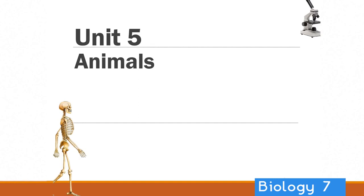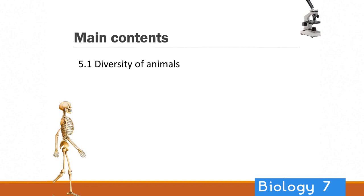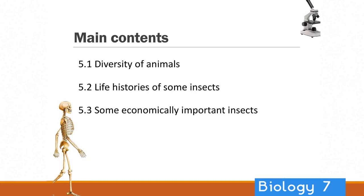Unit 5 on animals. This unit has four main components. The first is the diversity of animals. In 5.2 we'll be looking at the life histories of some insects. In 5.3 we'll be looking at some economically important insects, and in 5.4 we'll be investigating social insects.